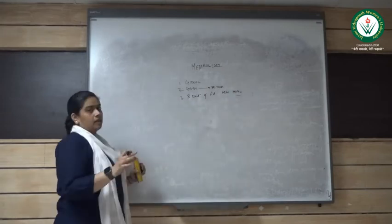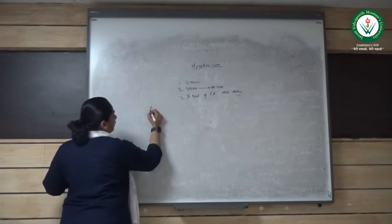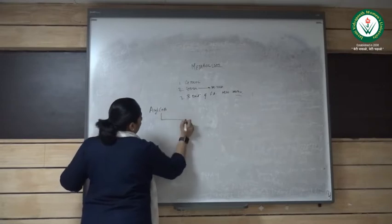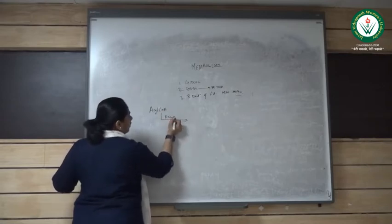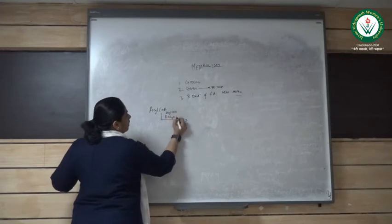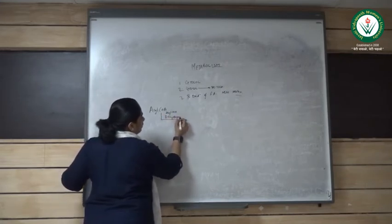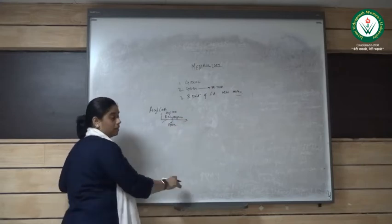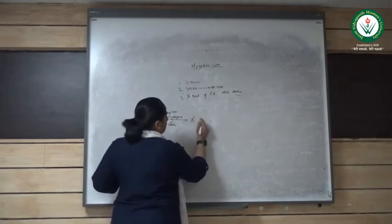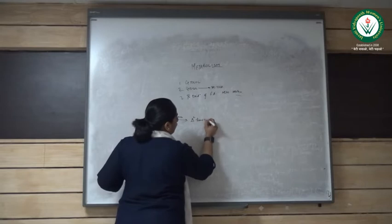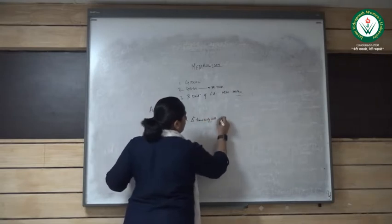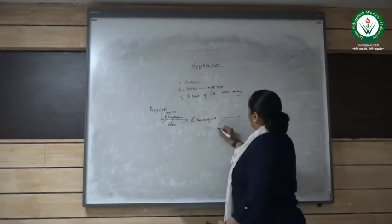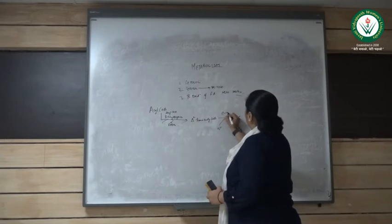For that there are certain enzymes so first the activated form of fatty acid that is the acyl coenzyme A undergoes the dehydrogenation with the help of acyl coenzyme A dehydrogenase enzyme. So one molecule of FADH2 is formed and delta trans-enoyl coenzyme A is produced. This trans-enoyl coenzyme A then undergoes hydration with the help of enzyme enoyl hydratase.